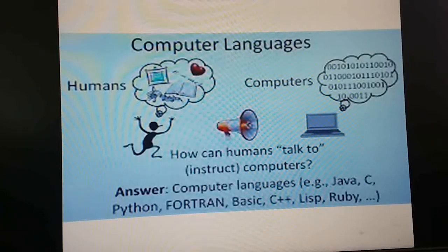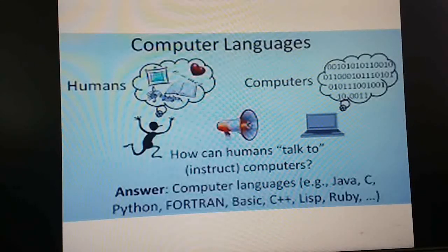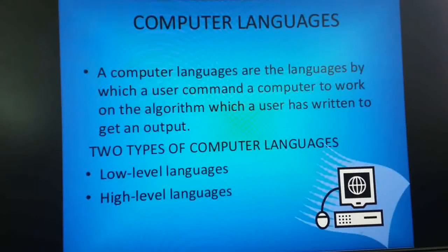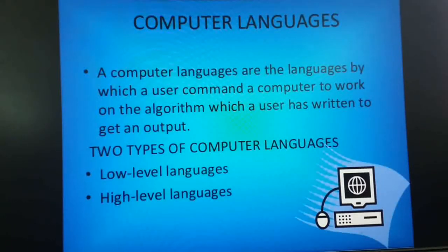Whatever language we know is our human language, that is English, and a computer understands only machine language. So the question is: how can a human talk to or instruct computers? The answer is we have to know about computer programming languages — Java, C, C++, Python, Fortran, Basic, LISP, Ruby, PHP, and many others — so that the computer can understand and translate into machine language, and then convert machine language back into human language.